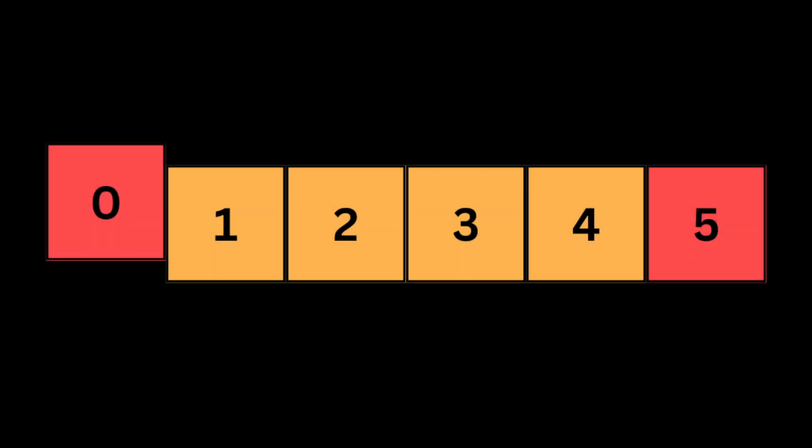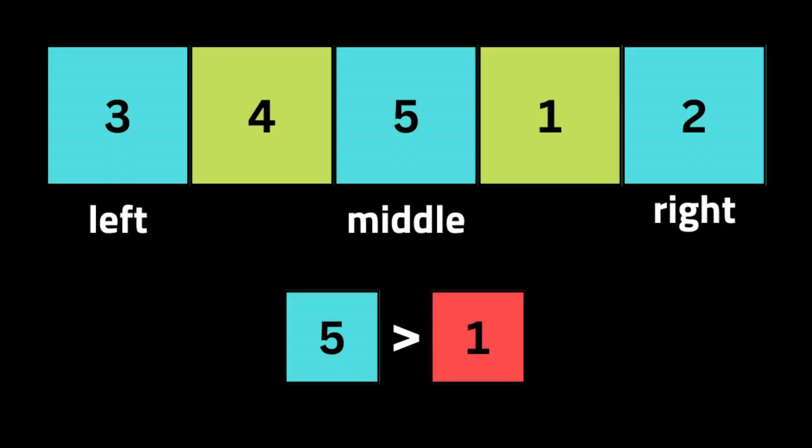Let me show you how we're going to do it. First, we check if the array is a regular sorted array — in that case the first value is always less than the last value, so we return the first value. If we have a rotated sorted array, the first value is always greater than the last value. It's like we have two sorted arrays inside one array: the right of the minimum is always less than the left.